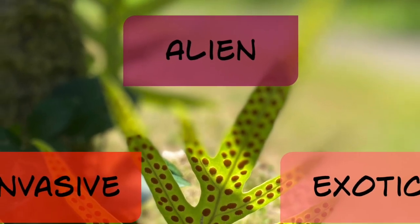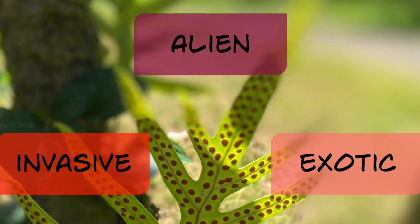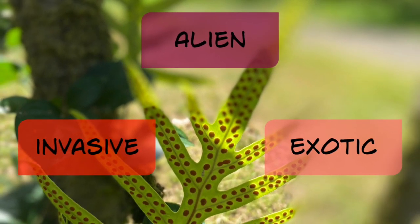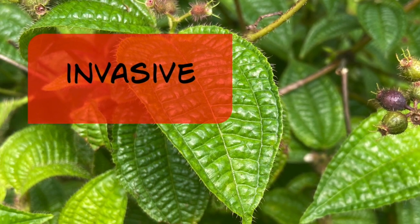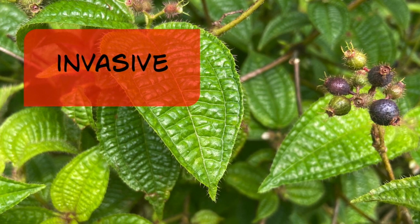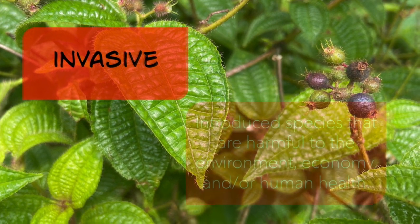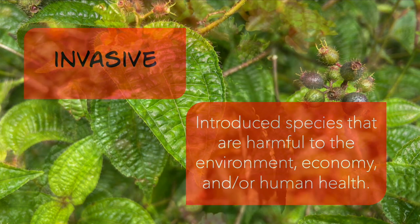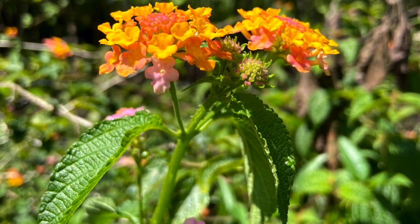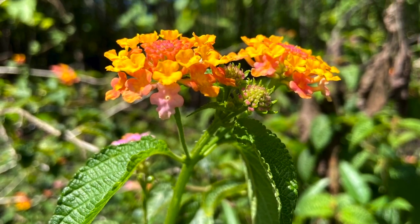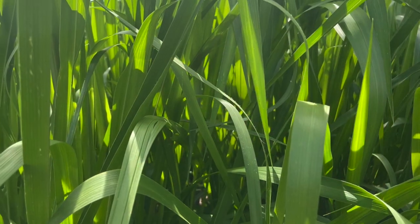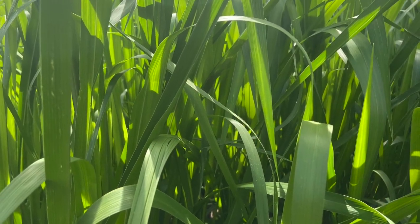Now let's take a look at species that were introduced after western contact. The alien category can be broken down further into invasive and exotic species. Invasive species are those that are harmful to the environment, economy, and or human health. Invasive plants are able to quickly reproduce, can easily disperse their seeds, grow quickly, and therefore are able to outcompete and displace native species.